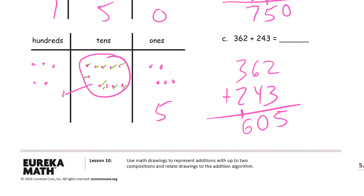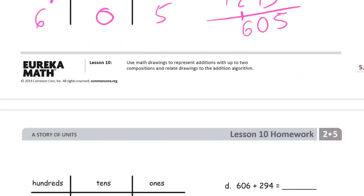Gotta bundle those up. Compose a hundred. Zero tens left after I do that. And I count my hundreds, I've got five, six, hundred five is my sum there.